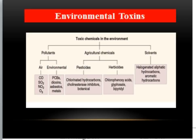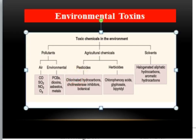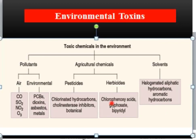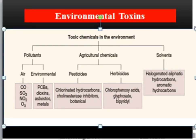The second topic is environmental toxins. We will discuss toxins one by one, discuss the mechanism of toxic effect, and discuss reversal. Environmental toxins are divided into three categories: pollutants, agricultural chemicals (pesticides and herbicides), and solvents.